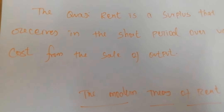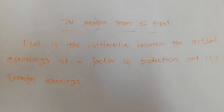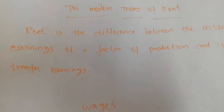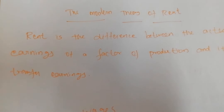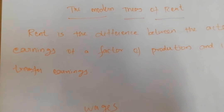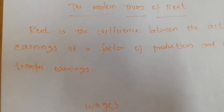The rent enters into the price, but quasi rent does not enter into the price. Rent is used for land for cultivating crops, whereas quasi rent is income derived from machines and other appliances made by man.